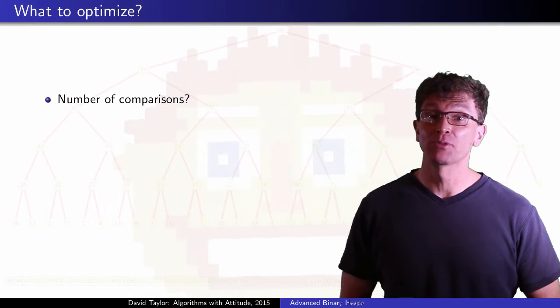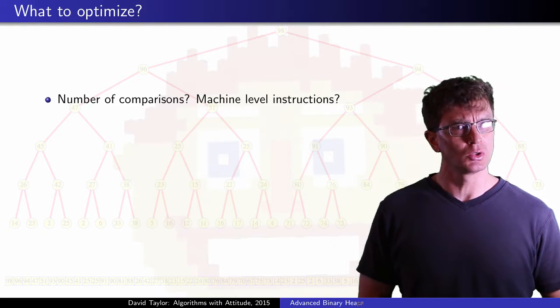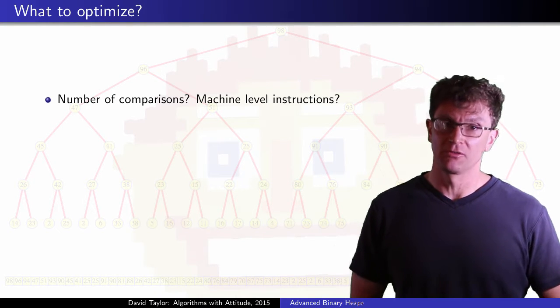So what do I mean when I say optimize the code? Am I talking about number of comparisons? Am I talking about machine level code? Let's start with number of comparisons.